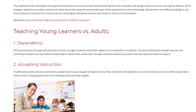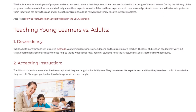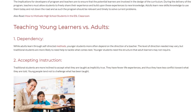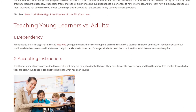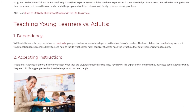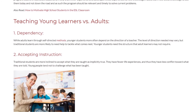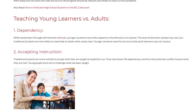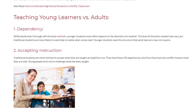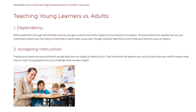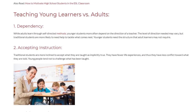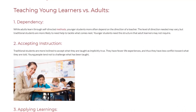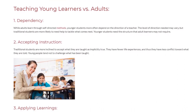The second difference is accepting instruction. Traditional students are more inclined to accept what they are taught as implicitly true. They have fewer life experiences, and thus they have less conflict toward what they are told. Young people tend not to challenge what has been taught.